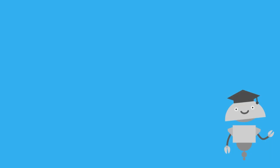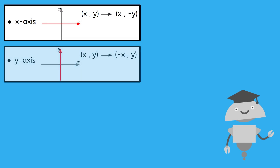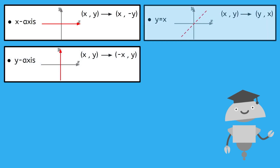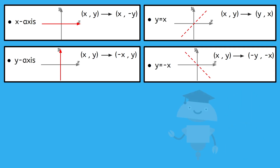Now you can use coordinate notation to describe reflections over four specific lines. Make sure you have some awesome notes before moving on to those practice problems. See you next time!